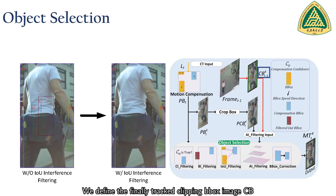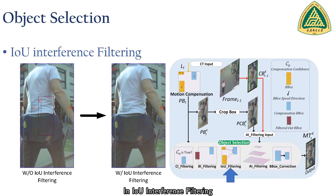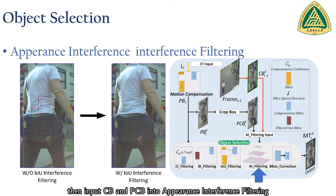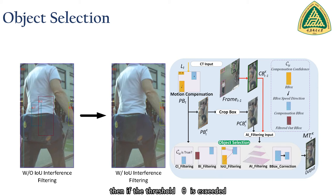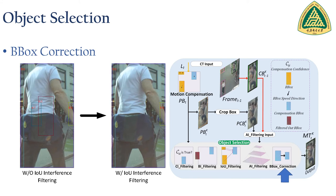We define the finely tracked clipping box image CB, and crop the image according to PB size as PCB. In IOU interference filtering, we eliminate boxes with object occlusion and object overlap to further prevent wrong compensation. We then input CB and PCB into appearance interference filtering, which is mainly composed of SIFT feature extraction and KNN matching. If the threshold theta_m is exceeded, we carry out the final box correction, filtering those with larger or smaller PB, and finally output to the tracking sequence.